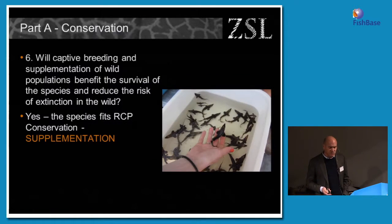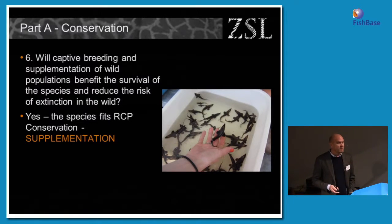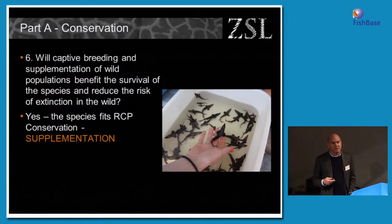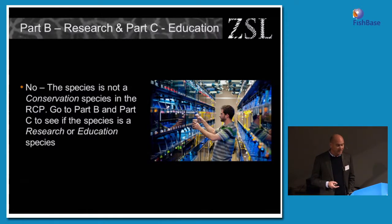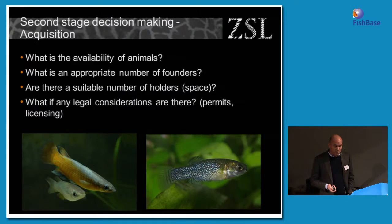If the answer from question four was no, we jump to question six: will captive breeding and supplementation of wild populations benefit the survival of the species and reduce the risk of extinction in the wild? This is the case for sturgeon in North America. If yes, the species can potentially fill a supplementation role. Part B then jumps down — if we get through the whole process and a species either does or doesn't fit conservation, we go through research and education questions. If no to conservation, the species is not a conservation species on the RCP, and we go to Parts B and C to determine whether it fits into either of those categories.